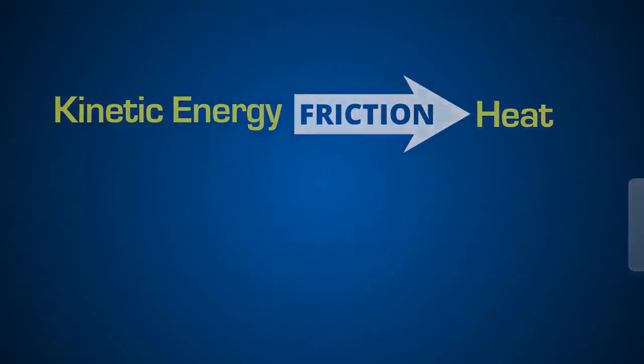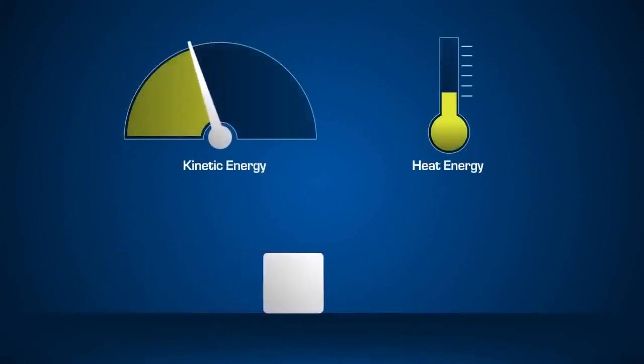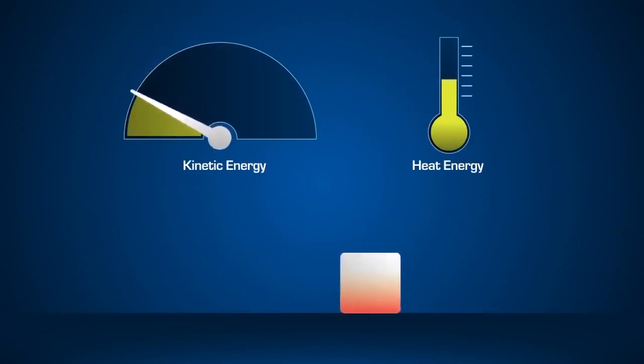But what is friction? Friction is the resistance an object experiences when one surface moves against another. As you can see, our block is now sliding along the floor and friction is converting its kinetic energy into heat energy, slowing the block and eventually bringing it to a stop.